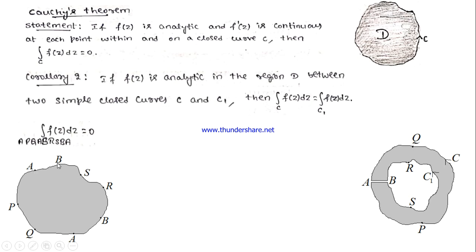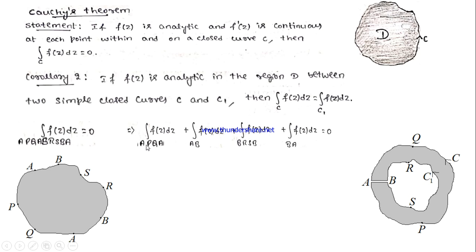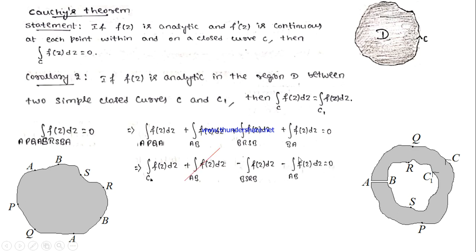We know that integration from A to S is integration from A to B plus integration from B to S. So I rewrite this as: integration from A to A along curve A, P, Q, A — plus integration from A to B — plus integration from B to B along R and S — plus integration from B to A — equals zero. The path A, P, Q, A represents the outer curve C. The path B, R, S, B represents the inner curve C1 but in the opposite direction. So this integration should be integration from B, S, R, B, which represents C1. And integration from B to A is minus integration from A to B, so these two cancel, leaving integration over C equals integration over C1.